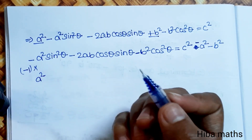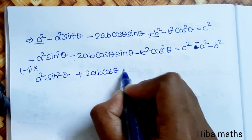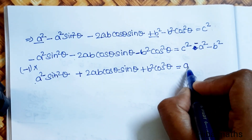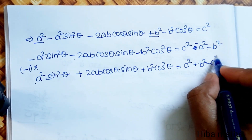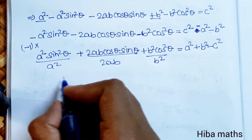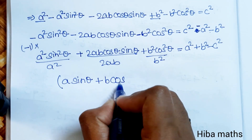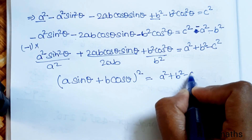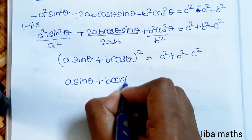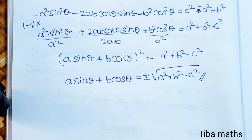So next line we get: plus 2ab cos theta sin theta plus b squared cos squared theta. The right side simplifies to a squared plus b squared minus c squared. This full term — a squared, 2ab, b squared — is in the format of a plus b whole square. So a sin theta plus b cos theta whole square equals a squared plus b squared minus c squared. Taking square root: a sin theta plus b cos theta equals plus or minus root of a squared plus b squared minus c squared.